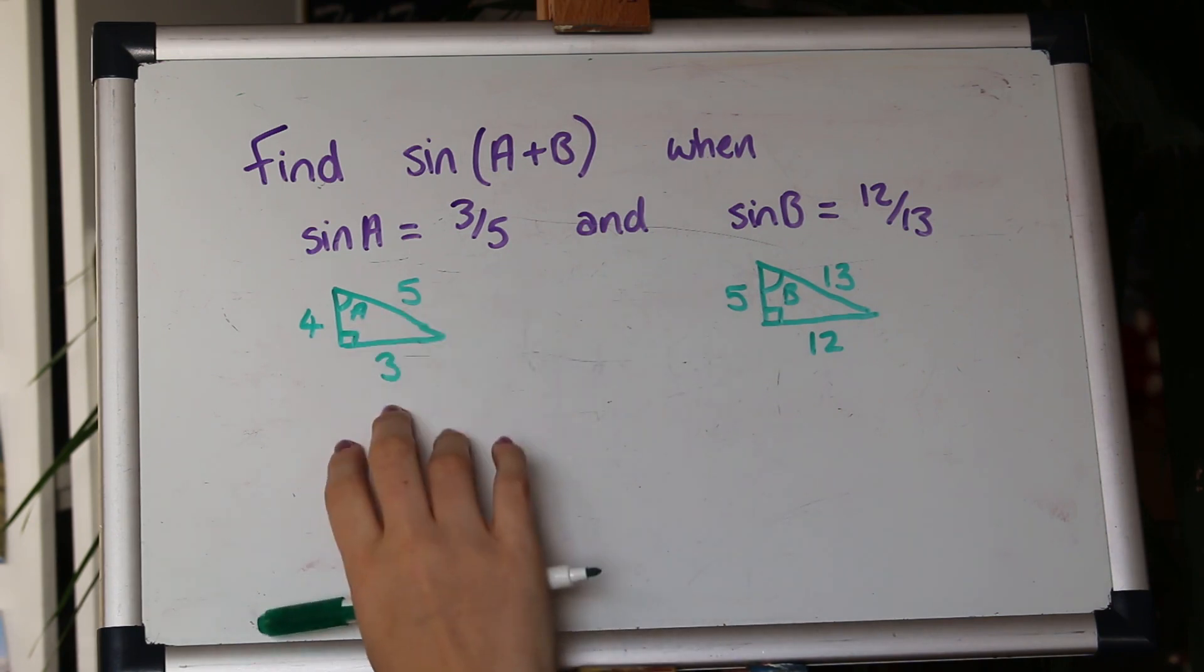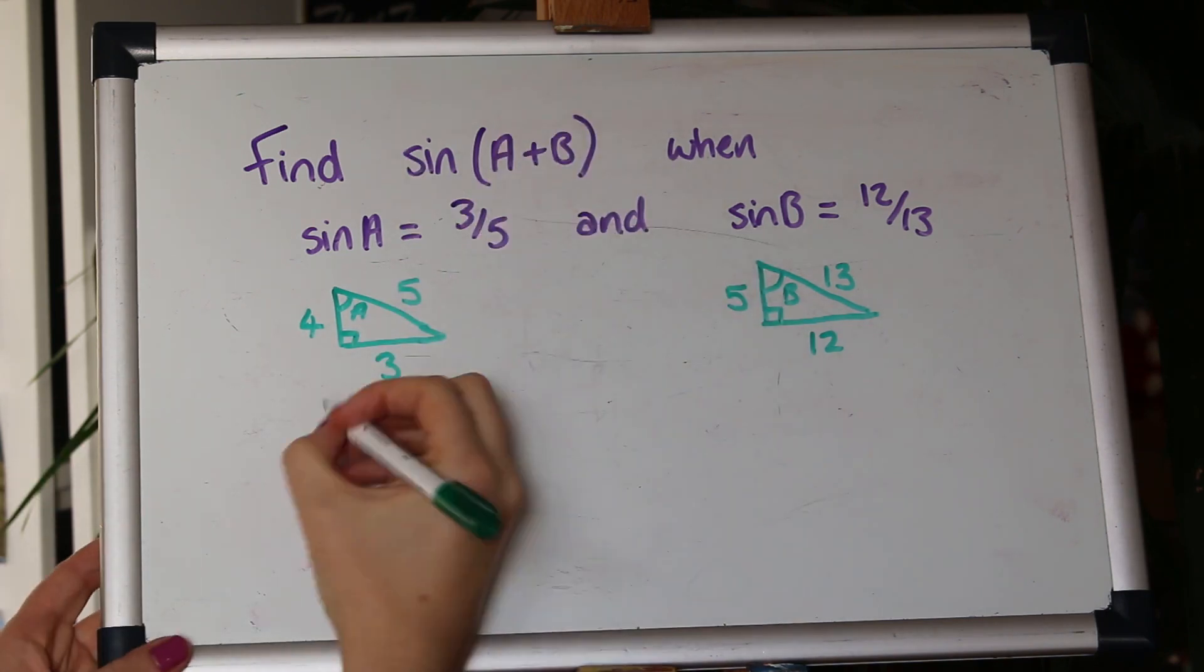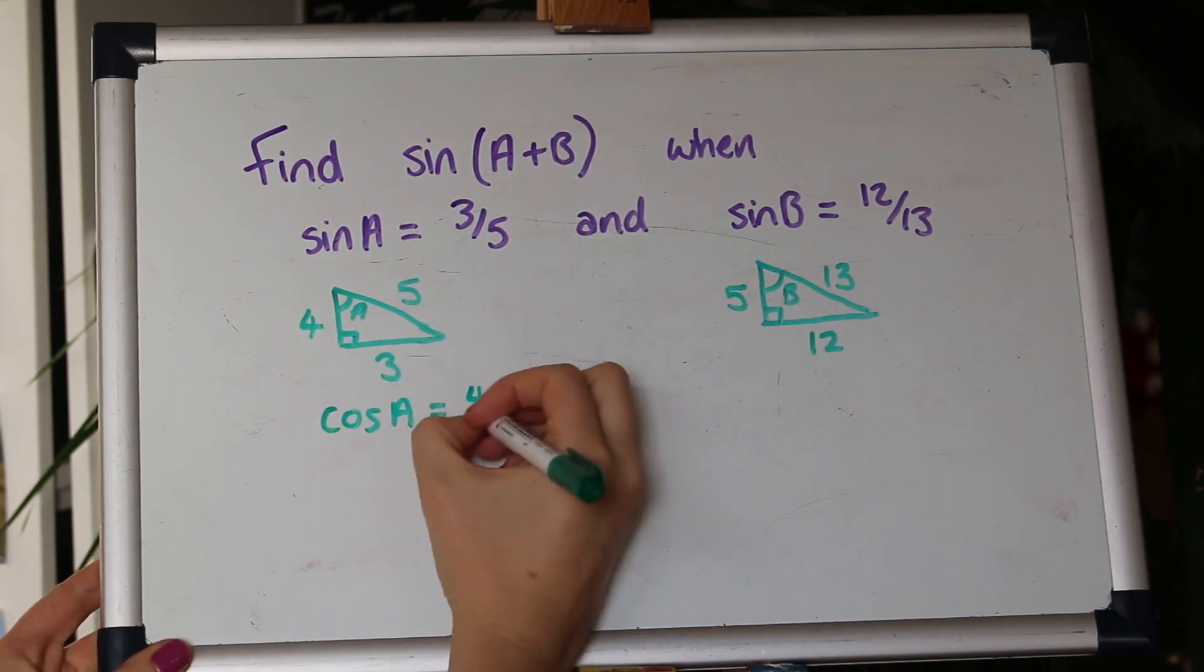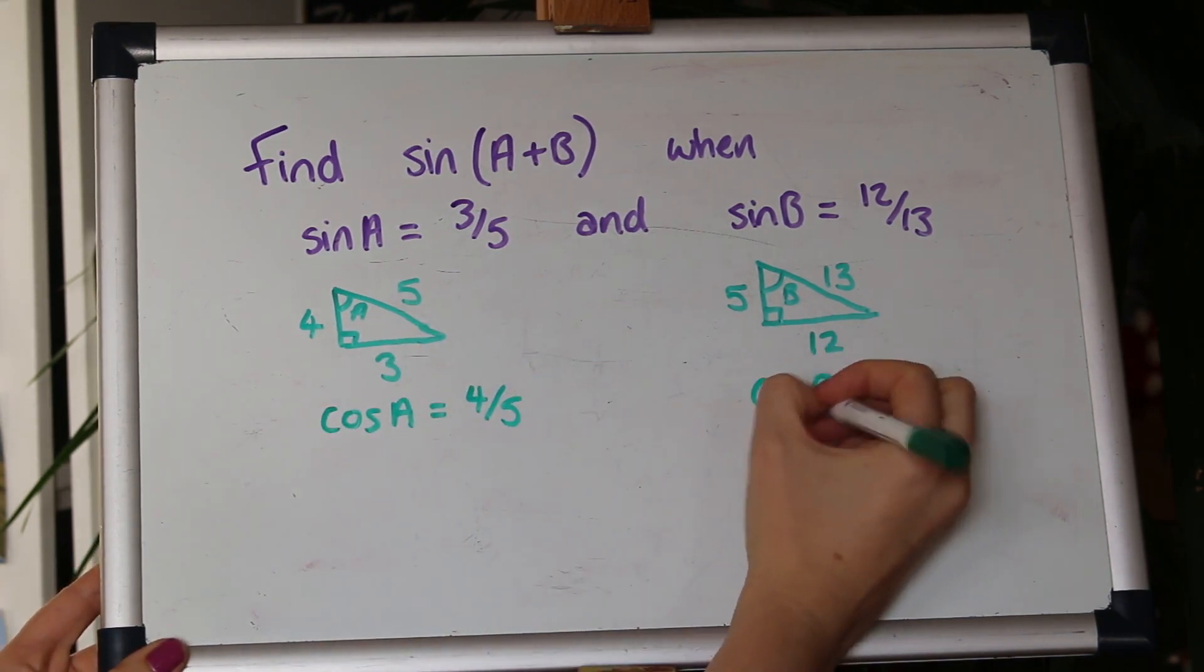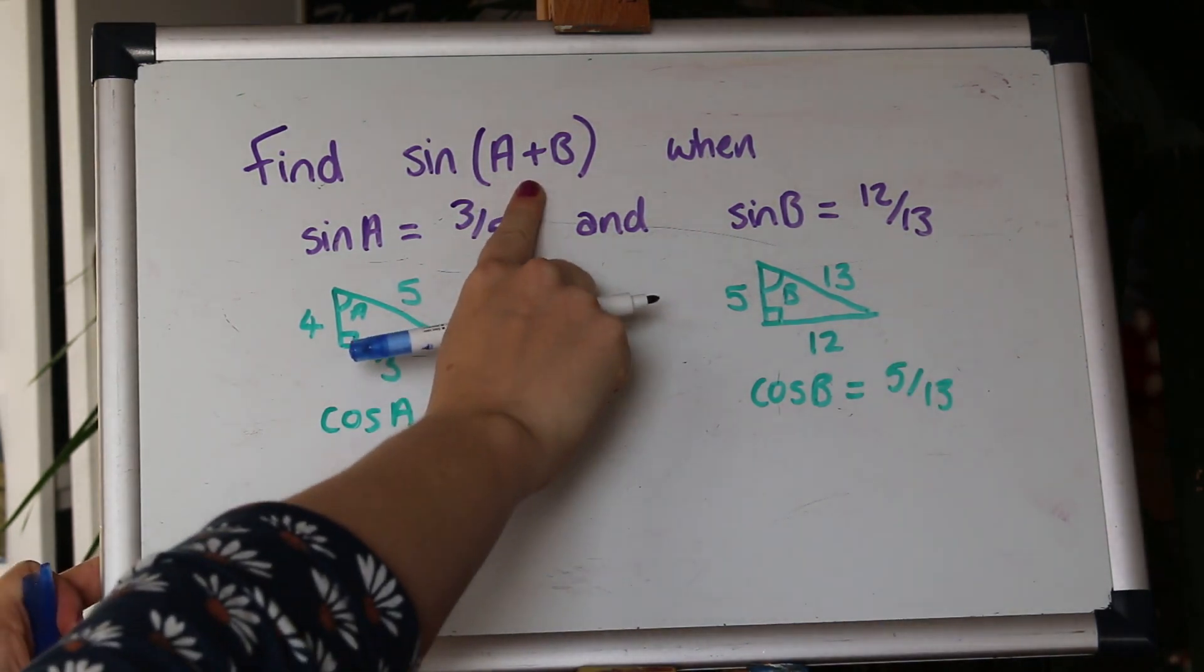So now we can pull out cos and tan of a and b. We'll only need cos though in this addition formula. Cos is adjacent over hypotenuse so that's 4 fifths. Now we can go ahead and find this using the addition formula.